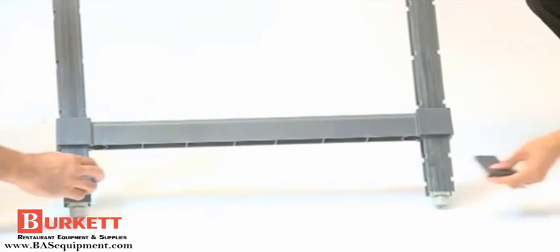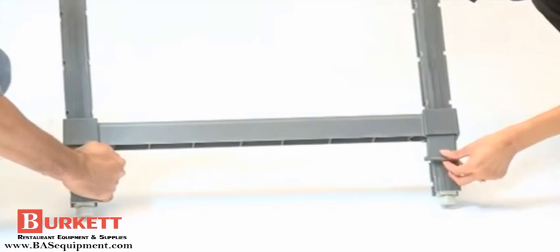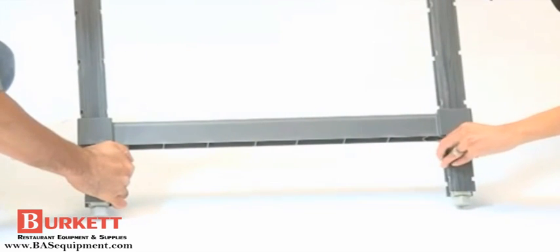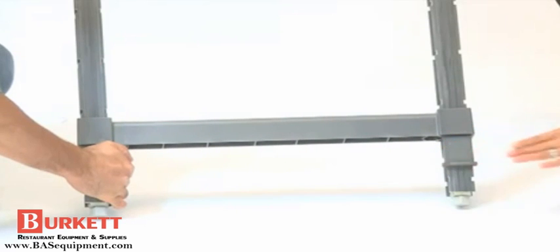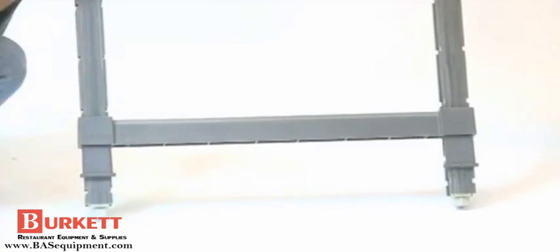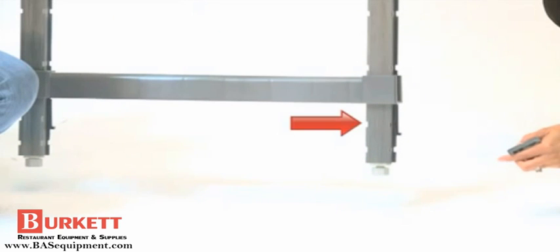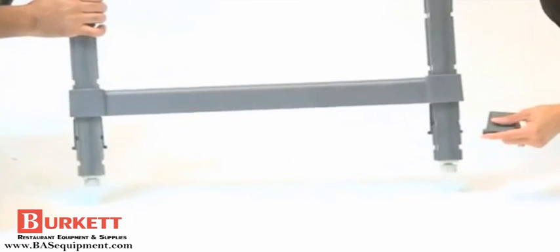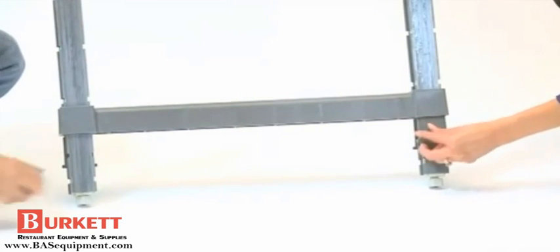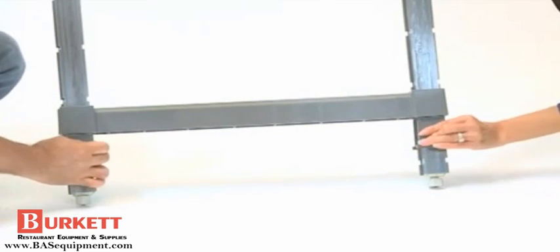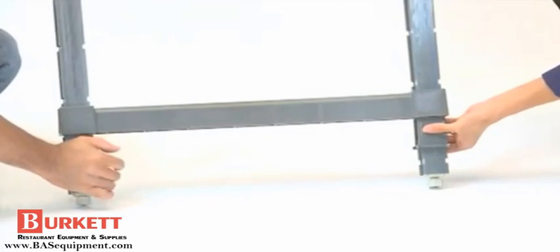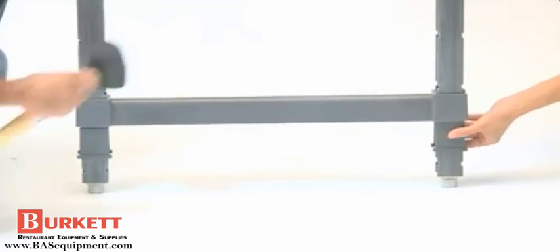Now we will attach the bottom wedges and bottom post connector. For stationary units, it is important that the bottom post connector is installed on the second notch from the bottom. This helps provide better stabilization. Attach a wedge on each side just as you did on the top. You will hear them click into place.